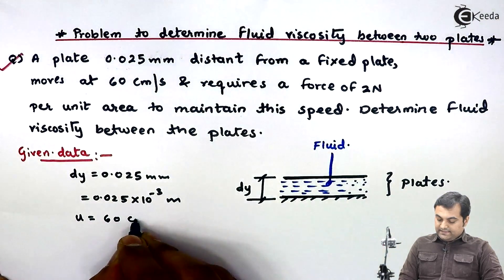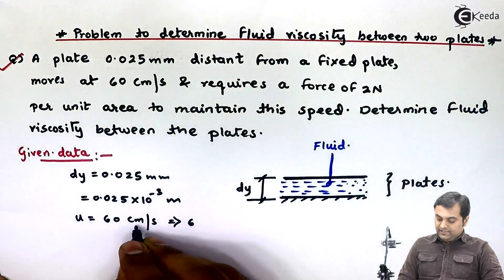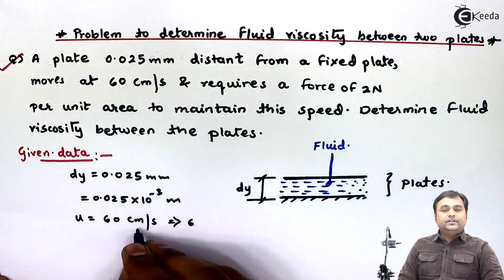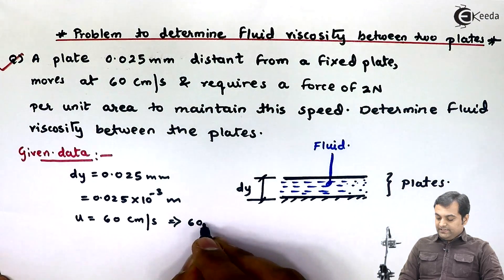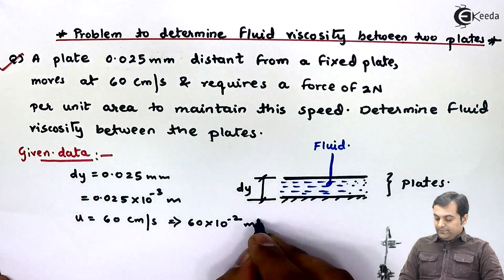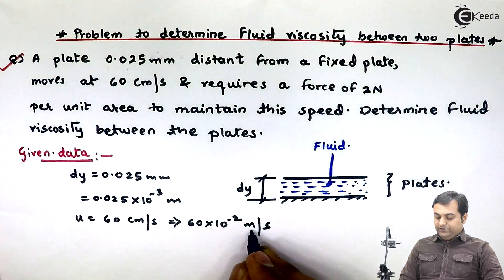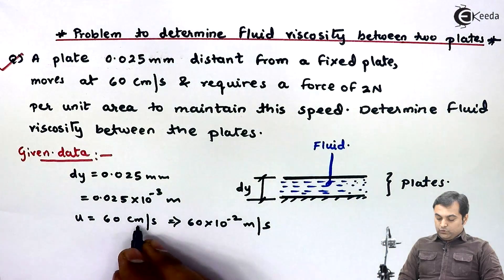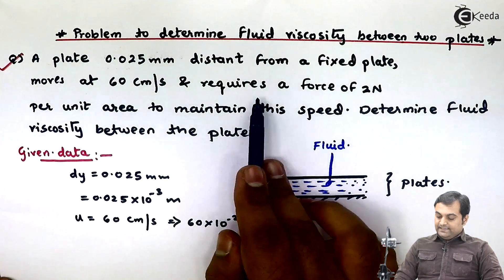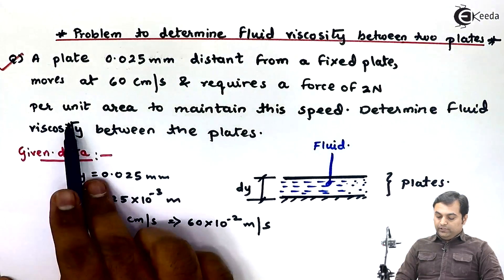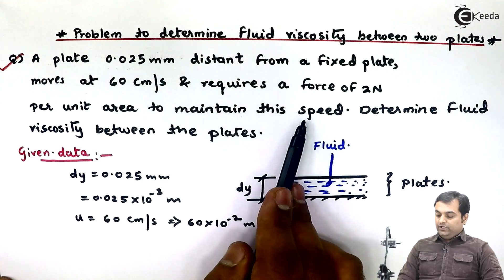Next, the velocity is given as 60 centimeters per second. I'll denote it by u, so u is equal to 60 centimeters per second. Converting to SI units: one centimeter equals 10 raise to minus 2 meters, so u equals 60 into 10 raise to minus 2 meters per second.